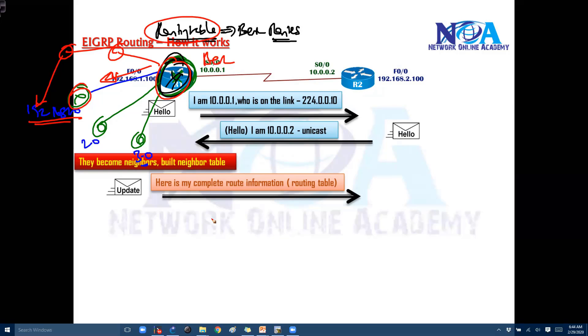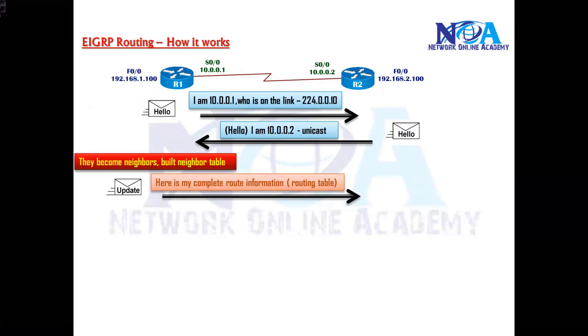So the neighbors will exchange the complete routing information, that is your routing table. And once you send that update, probably router 2 is going to send out an acknowledgement packet saying that okay I received this update. So it uses reliable updates here with whenever it sends an update it's going to confirm that.